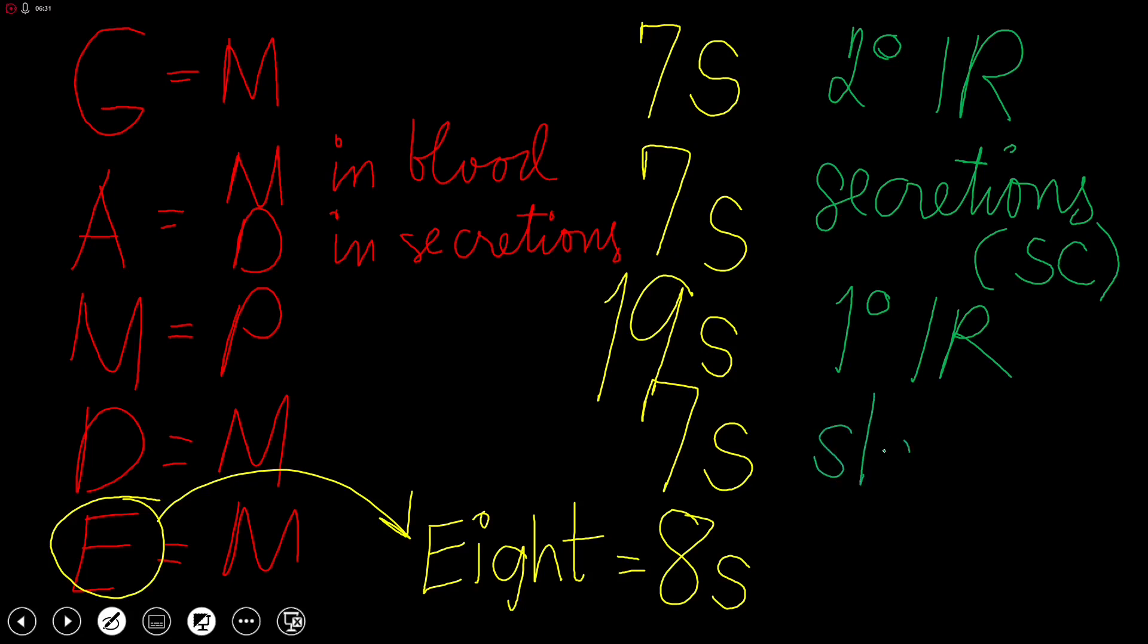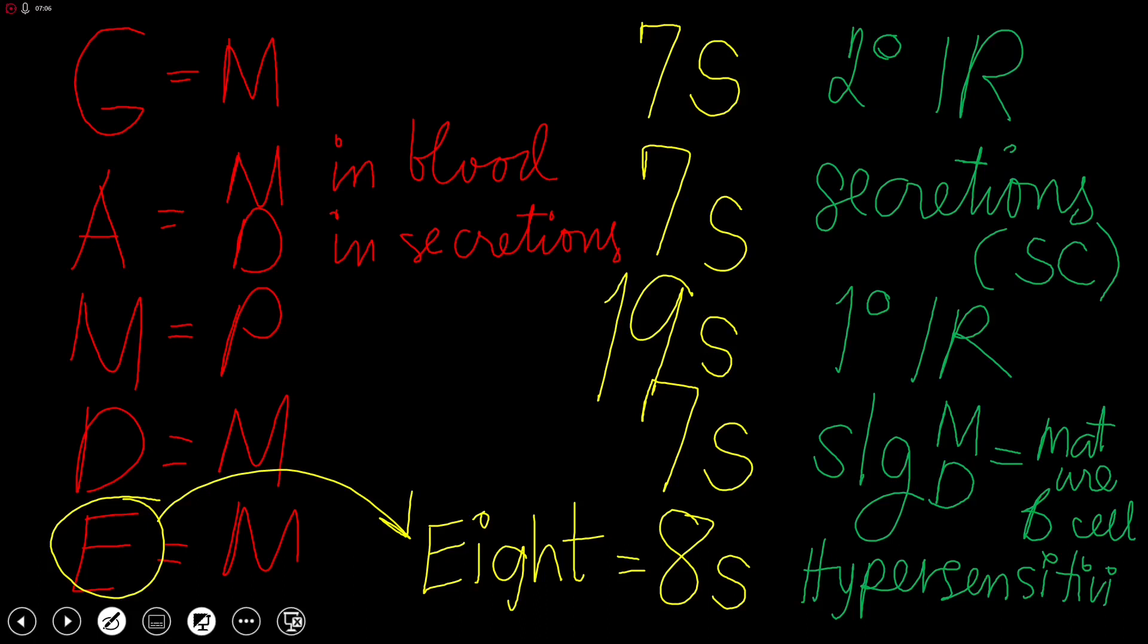IgD is, as we know right now, is one of the surface immunoglobulins found on a mature B cell. For your B cell to become a mature B cell, it has to have both of these antibodies on its surface. IgM and IgD will mean that your B cell is a mature B cell. So IgD is found on the surface of mature B cells. IgE, as we have already mentioned again, this will be responsible for hypersensitivity reactions.